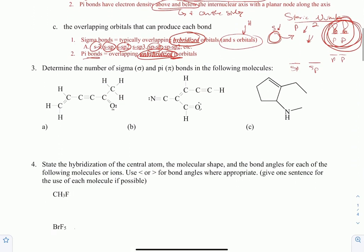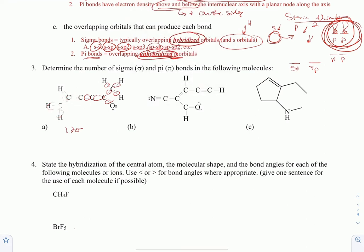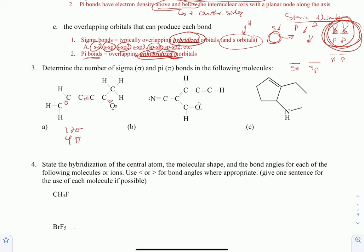Problem 3 says: determine the number of sigma and pi bonds in the following molecules. For sigma bonds, just count how many bonds you have total — that gives us 12 sigma bonds. For pi bonds, count the bonds in double and triple bonds beyond the first: that gives us four pi bonds.